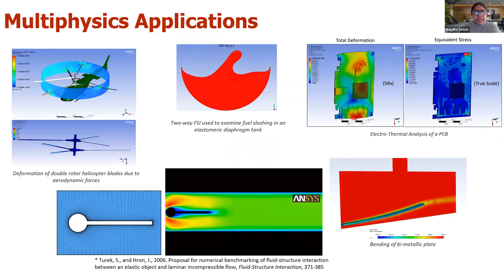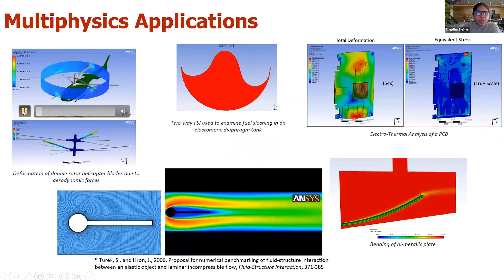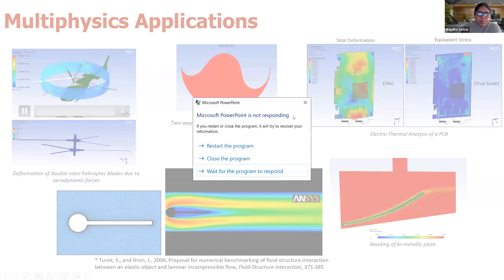Let's look at some classic multi-physics applications in industry. On the left, you can see a helicopter with a double rotor blade. Because of the aerodynamic forces on the helicopter blade, the blades undergo some deformation. So there's a very strong coupling between the CFD and the structural field.